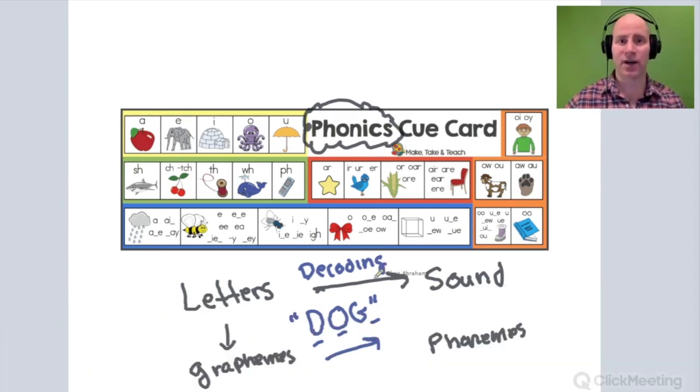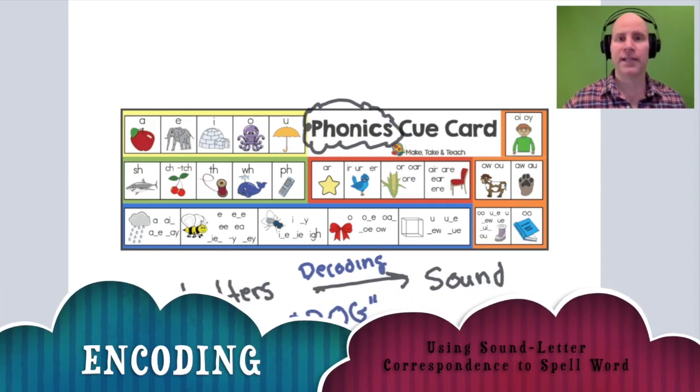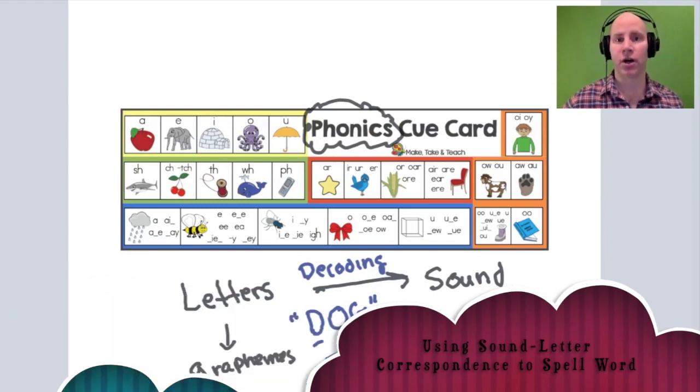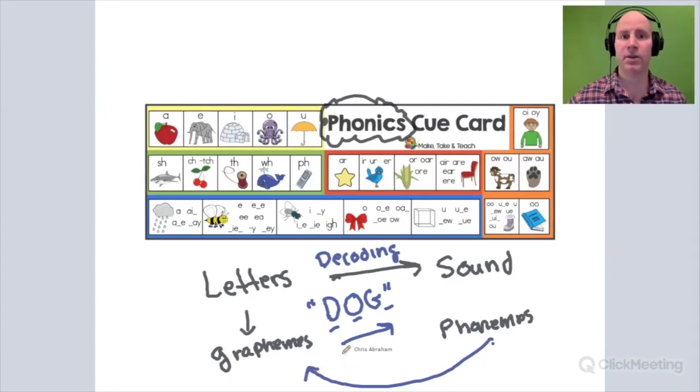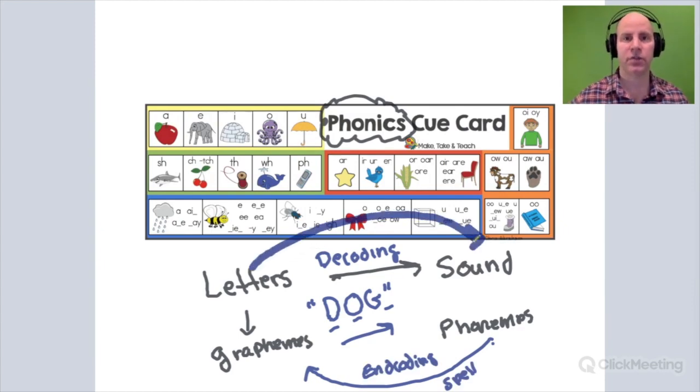Another side of phonics has to do with encoding. That's when a child takes sounds in oral language, like dog, and takes the sounds that they hear in dog and matches them up with their letters to spell the word. So when a child uses phonics to do letter-sound correspondence, they're using phonics to pronounce words correctly in print, and we call that decoding.